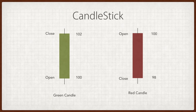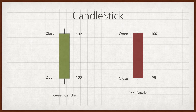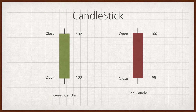In the green candlestick, let's say the stock opened at a price of 100 rupees and closed at 102. That basically means the stock moved in a positive direction and made a green candle. In the red candle, the stock opened at 100 rupees and went all the way down to 98 — that is called a red candle.